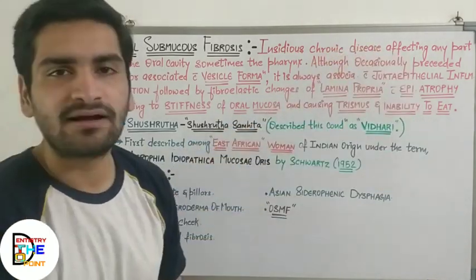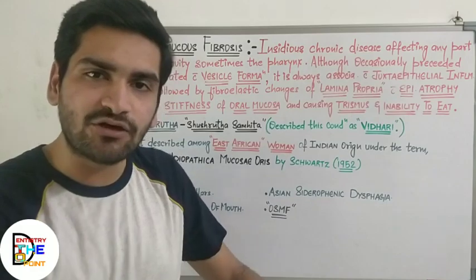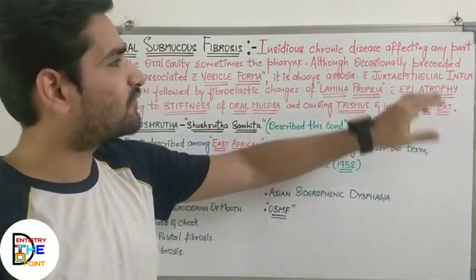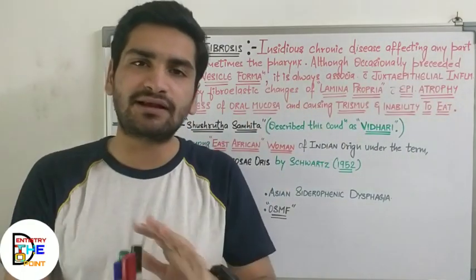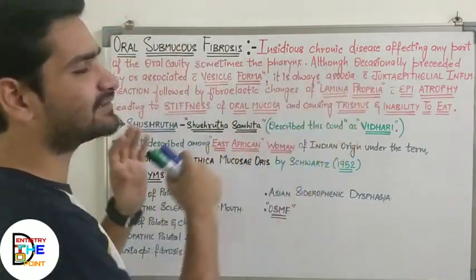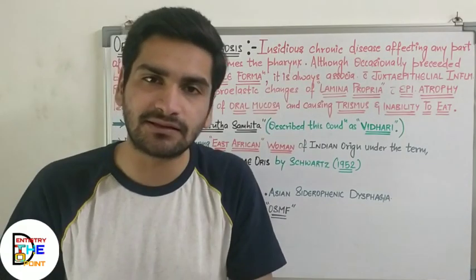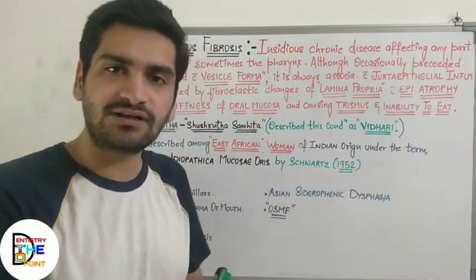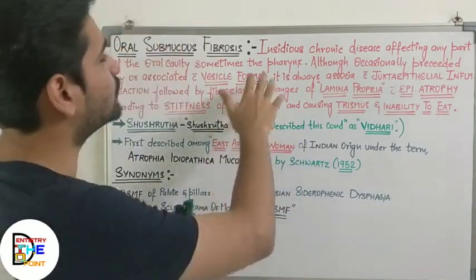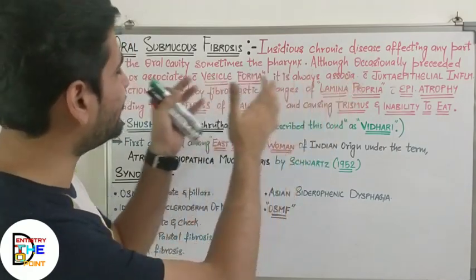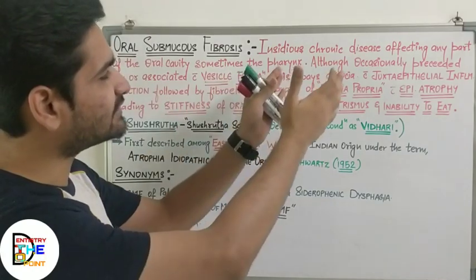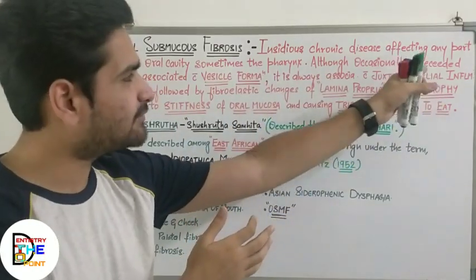Now let's start with oral submucous fibrosis. Firstly, it is an insidious chronic disease — not an acute disease, it is a chronic disease which takes time — affecting any part of the oral cavity. Sometimes the pharynx is also affected. Understanding the definition rather than mugging it up will help you remember it longer. So the first sentence is: insidious chronic disease affecting any part of the oral cavity, sometimes pharynx.